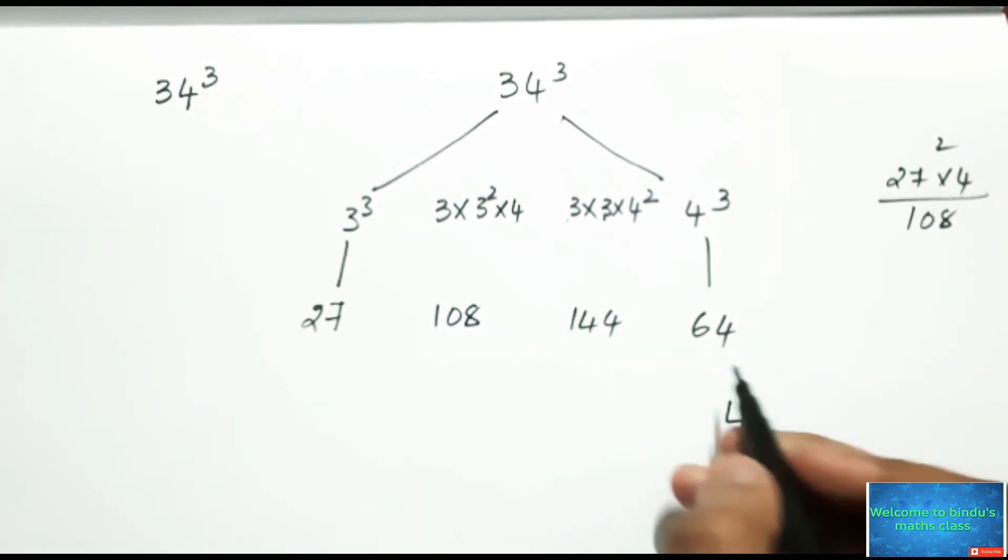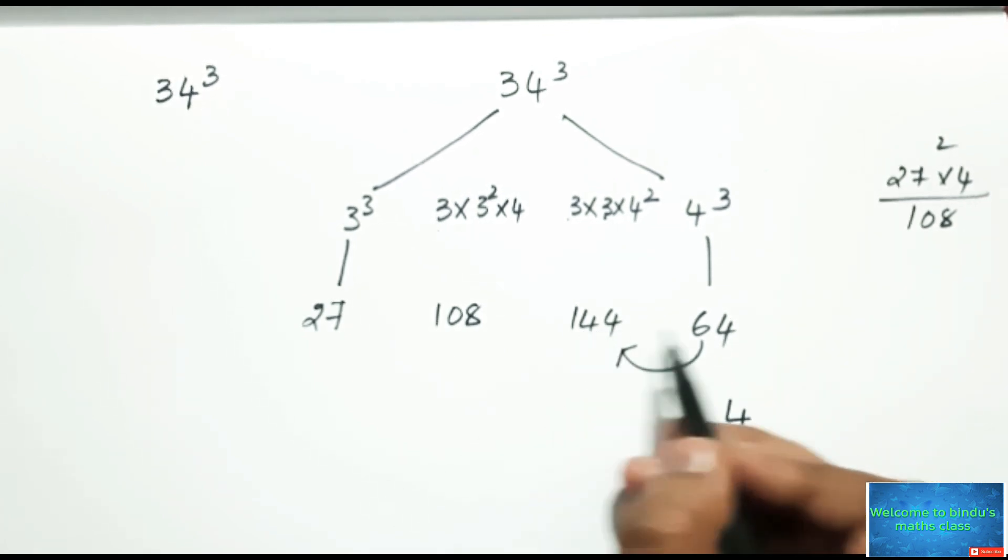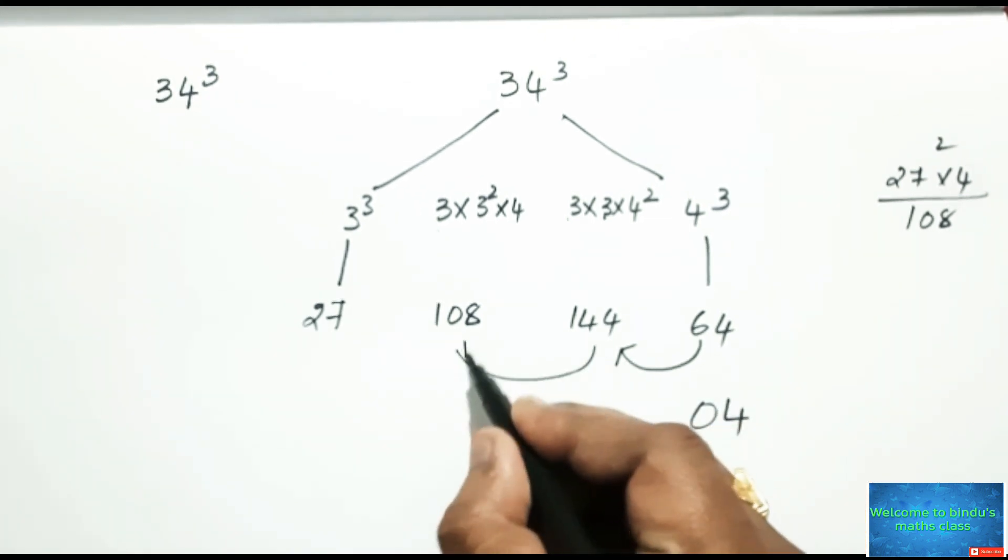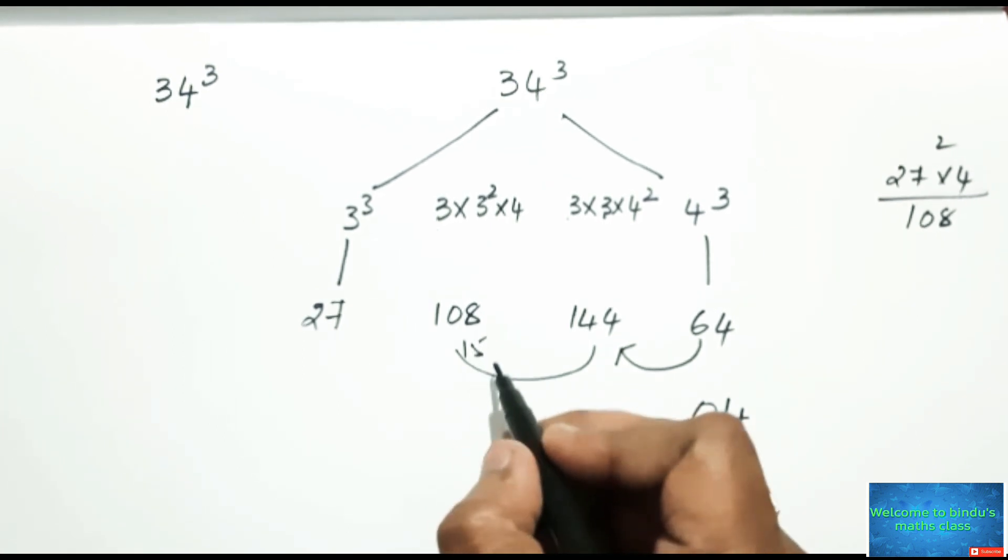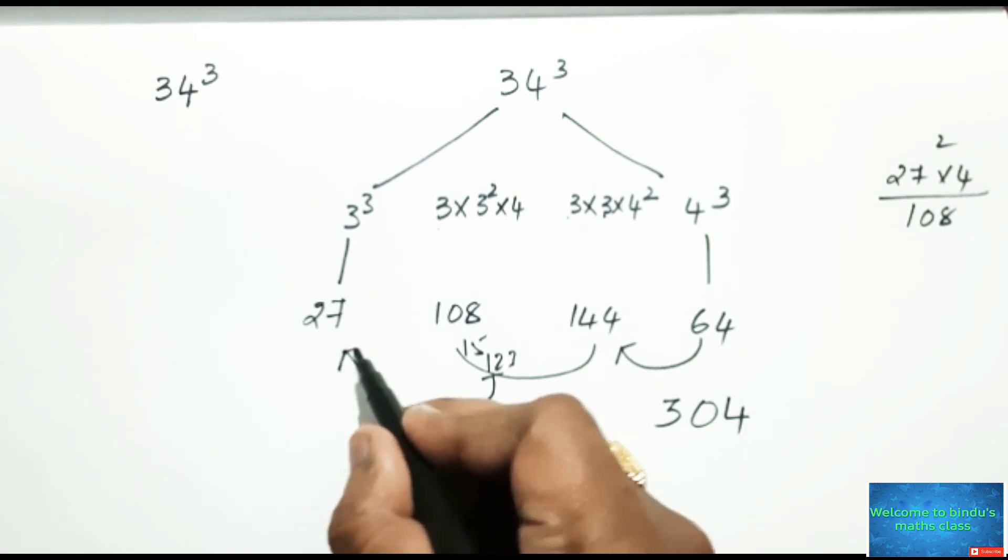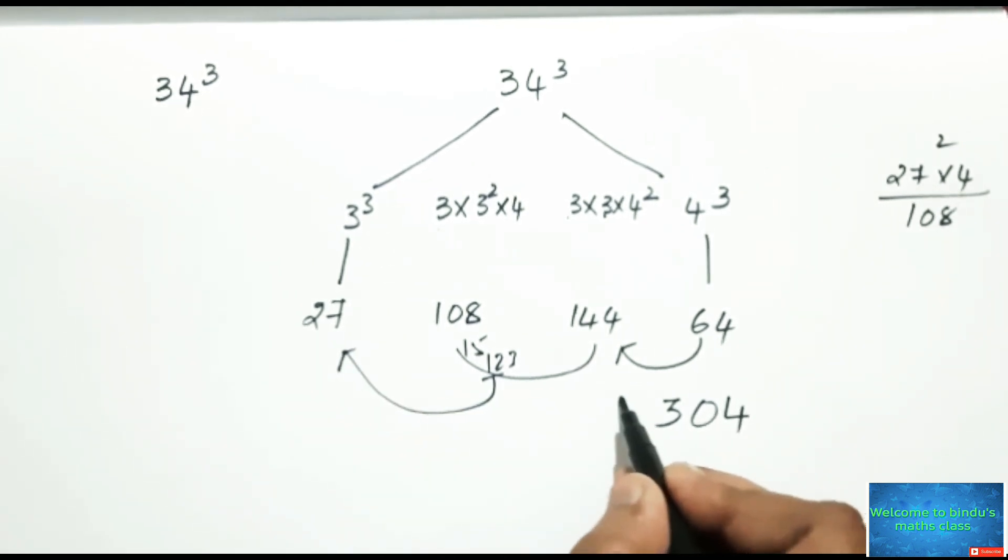Now let us add. First of all take 4, and this 6 will be carry forwarded to here. 144 plus 6 that is 150, write down 0 and 15 will be carry forward here. Already 108 is there, 108 plus 15 that is 123, write down 3 here and this 12 will be carry forward to here. 27 plus 12 that is 39, write down 39 here.